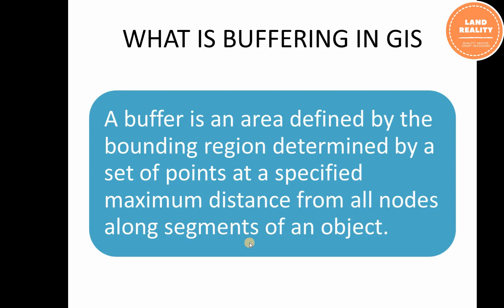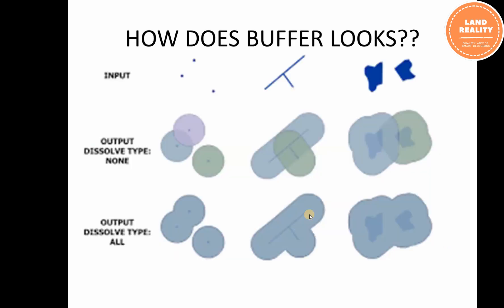What is buffering in QGIS? The buffer is an area defined by a bounding region, determined by a set of points at a specified maximum distance for all nodes along segments of an object. How does a buffer look? These are the inputs: points, lines, and polygons. You will appreciate more about distance when we are demonstrating practically using QGIS and ArcGIS.